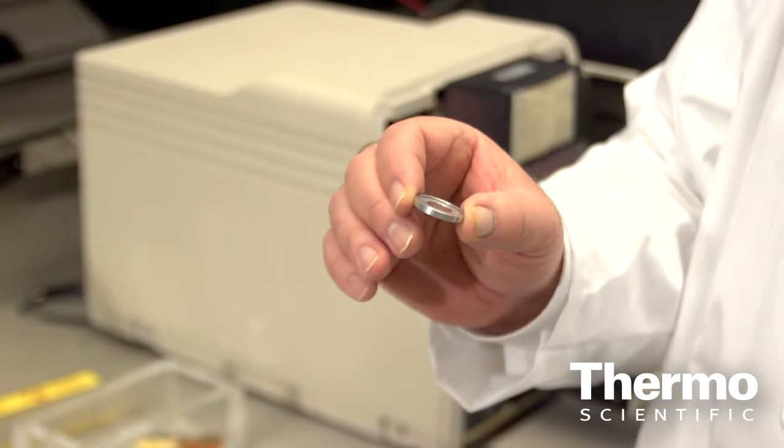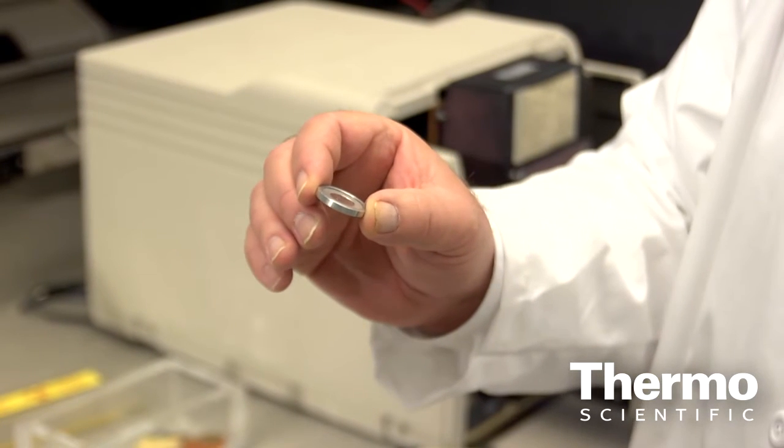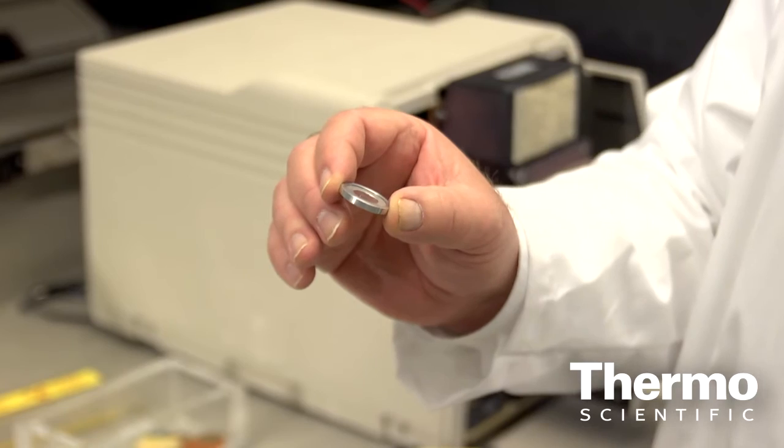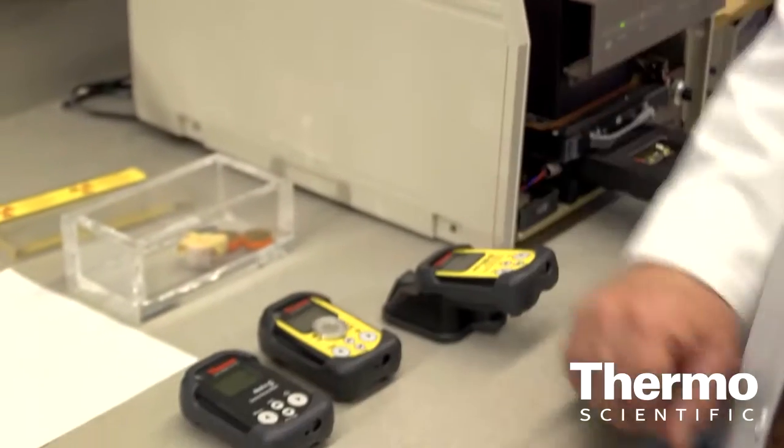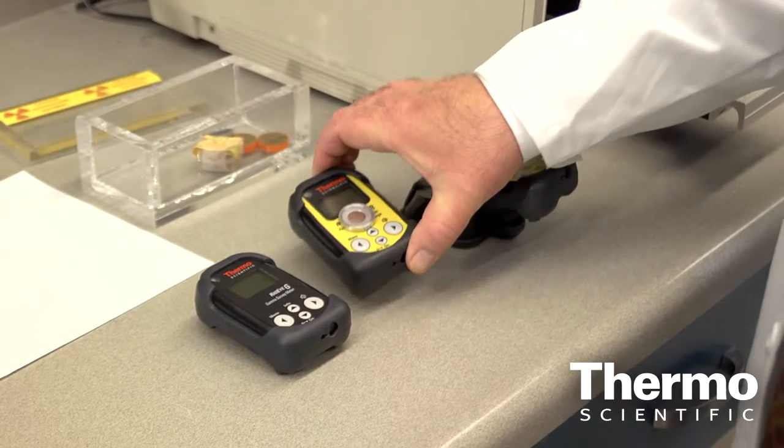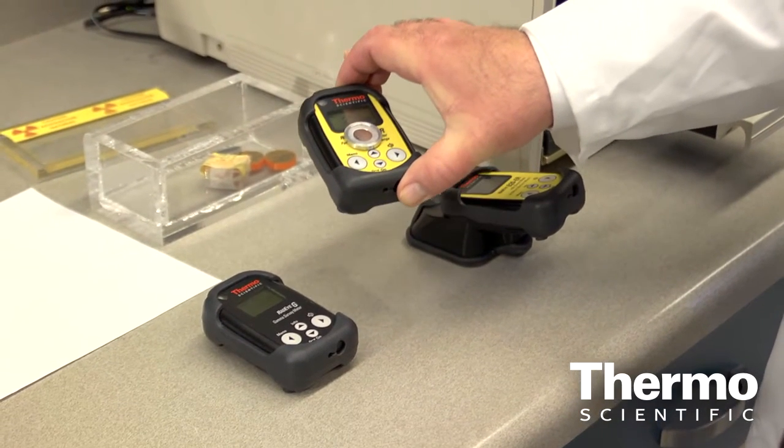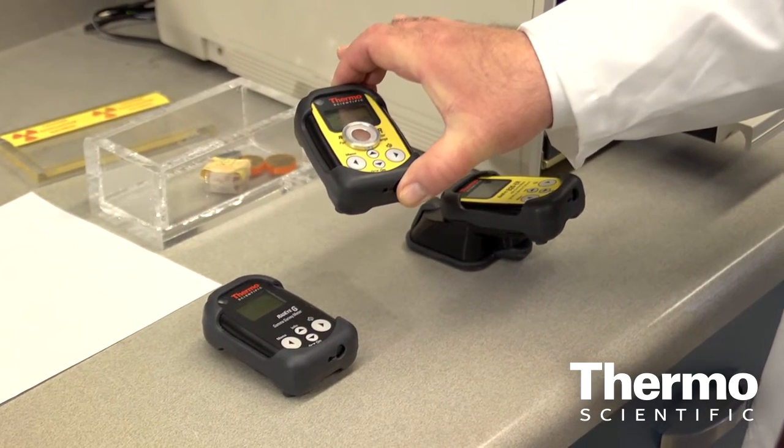This is an americium-241 source. This is an alpha source, emits alpha particles, which are massive particles. Not much is happening here. This one doesn't pick anything. Actually, not even one count.